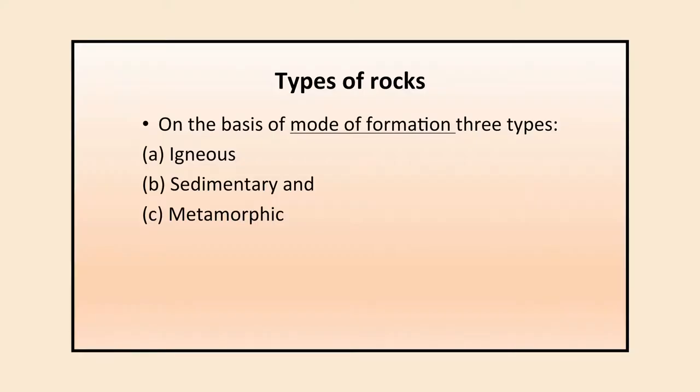When talking about minerals and rocks, we should know the different types of rocks. On the basis of mode of occurrence or mode of formation there are three types of rocks: igneous rocks, sedimentary rocks, and metamorphic rocks. We will now deal in detail with what these rocks are, how they are formed, and their different types.